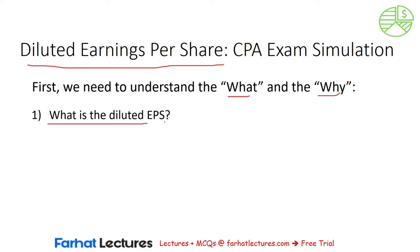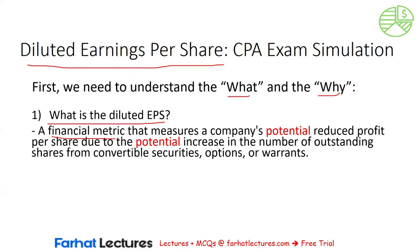The first question is: what is diluted EPS? It is a financial metric that measures a company's potential — and not actual — reduced profit per share, due to the potential and not the actual increase in the number of outstanding shares from convertible securities, options, or warrants. In the absence of these three, the diluted EPS is equal to basic EPS.